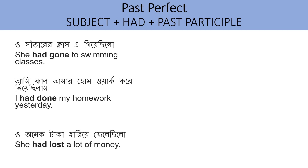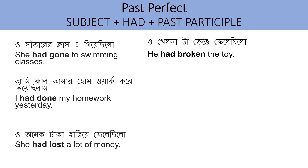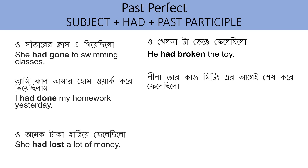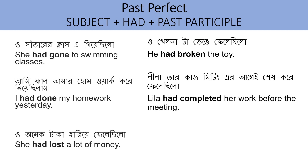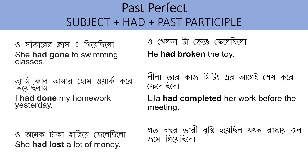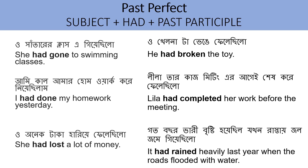ও খেলনাটা ভেঙে ফেলেছিল — He had broken the toy. Structure: He + had + past participle of 'break' → broken. Leela তার কাজ meeting-এর আগেই শেষ করে ফেলেছিল — Leela had completed her work before the meeting. গত বছর ভারী বৃষ্টি হয়েছিল যখন রাস্তায় জল জমেছিল — It had rained heavily last year when the roads flooded with water.